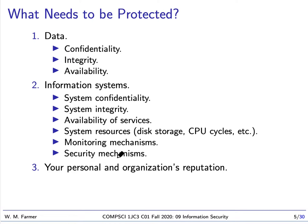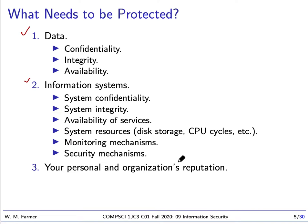Let's talk about what needs to be protected. We have data, and there are three main things that must be protected: confidentiality, integrity, and availability. We also have information systems — system confidentiality, system integrity, and availability of services. In addition, we have system resources; we don't want people stealing disk storage or CPU cycles. We have monitoring mechanisms and security mechanisms to protect these. And an overarching thing that needs to be protected is your personal or your organization's reputation. A significant security breach could greatly hurt your organization's reputation — it could even mean the end of your organization.